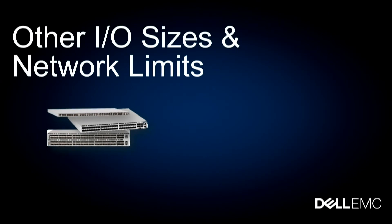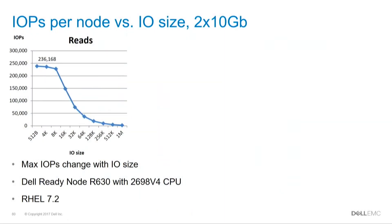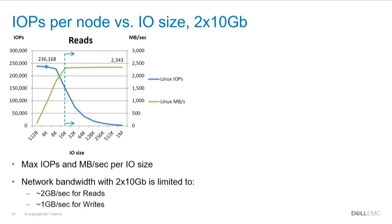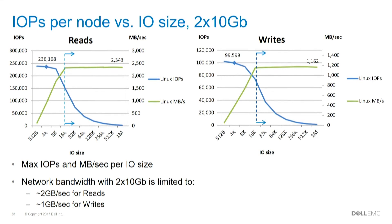I showed an example with small IOs where CPU was the limit. Now I'll show examples with larger IOs. The IOPS chart has IOPS on the Y axis and different IO sizes on the X axis — small IOs have about the same number as before, but the larger the IO, the lower the IOPS, because we start hitting bandwidth limits. Showing the same chart in megabytes per second, we see a flattening at 2 gigabytes per second per SDS node. The reason is that this config has two 10-gig ports, so we max out the port limit. On writes we get half, but we max out the ports.